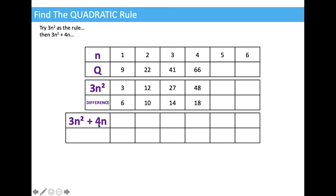Trying 3n squared plus 4n as the rule: when n is 1, we get the 3 from 3n squared plus 4 times 1, giving us 7. For n equals 2, 12 plus 8 gives us 20. For n equals 3, 27 plus 12 gives us 39. For n equals 4, 48 plus 16 gives us 64. So if the rule was 3n squared plus 4n, we'd get the numbers 7, 20, 39, and 64.